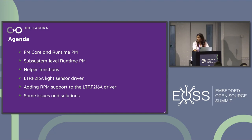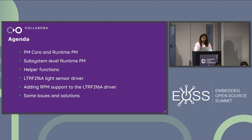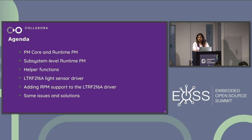Today I'll be speaking about the PM core and runtime PM relationship in general, then we'll look at subsystem-level runtime power management. I'll give a brief description of some helper functions, then we'll look at a light sensor driver to understand how it works so we can add RPM support to it. And finally, some issues and their solutions.